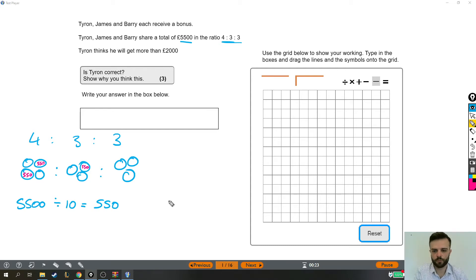So again, just to recap what we've done and why we've done it. If we need to split £5,500 in such a way that I can give one person four pieces, one person three and another person three, then altogether that's 10 pieces that I need to split it into. So I split it into 10 pieces and each piece is worth £550.